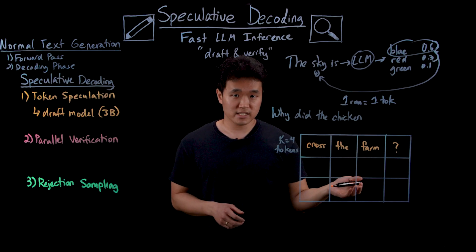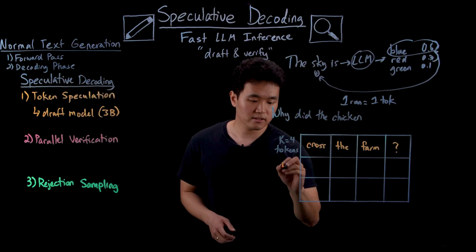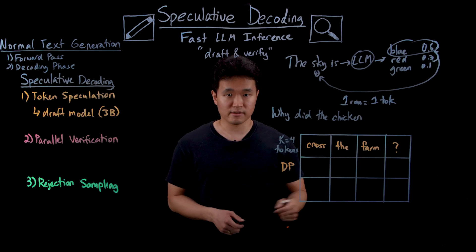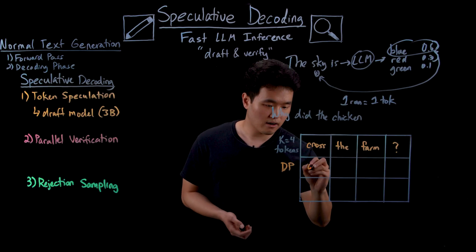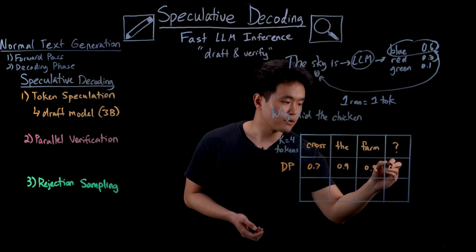Now in addition to each of these predictions, we also get their probabilities and distributions. Let's call these DP for draft probability, and we can jot them down here. As an example, say these are 0.7, 0.9, 0.8, and 0.8.